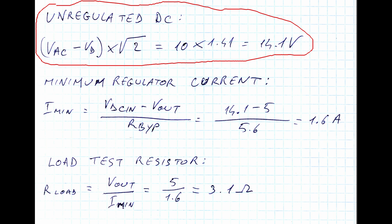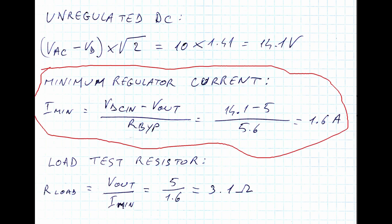The RMS AC voltage was around 10.6V, so we subtract one diode drop, because of the center tapped rectification, and multiply the value by the square root of 2, which is approximated as 1.41. Then, we calculate the required minimum load current simply as the difference between the input and the output voltage divided by the bypass resistor. In this case, we obtain 1.6A.